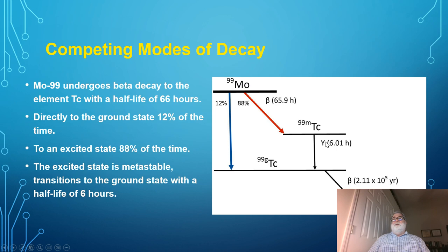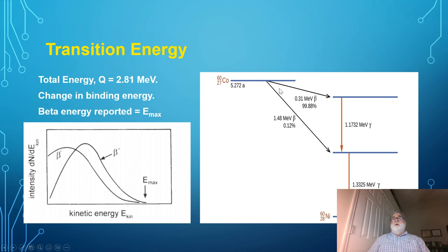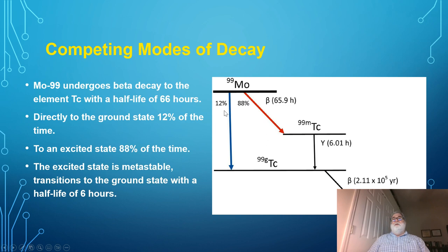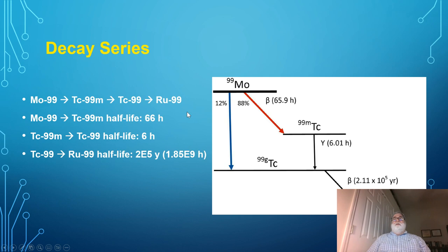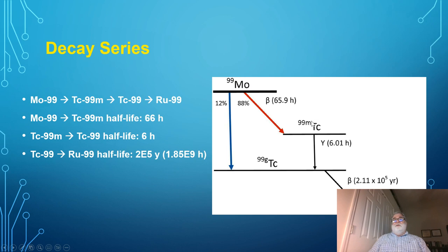Even though there are two modes of decay, there's only one half-life for this transition — it's just that fewer of them go by one route than another. The technetium-99 that is created is also radioactive. The molybdenum decays to technetium-99m, which decays to technetium-99 ground state. Technetium-99 is also radioactive with a very long half-life of about 211,000 years, or almost 1.8 billion hours — compared to 6 hours for Tc-99m and 66 hours for molybdenum-99.